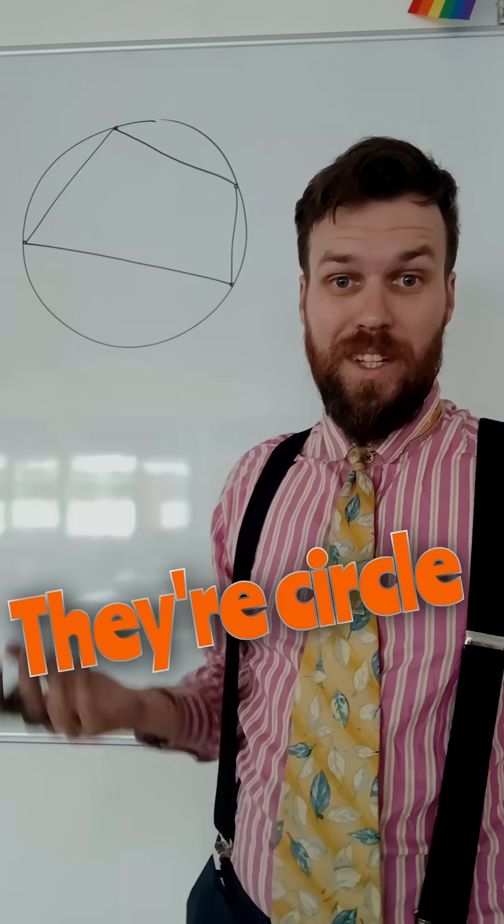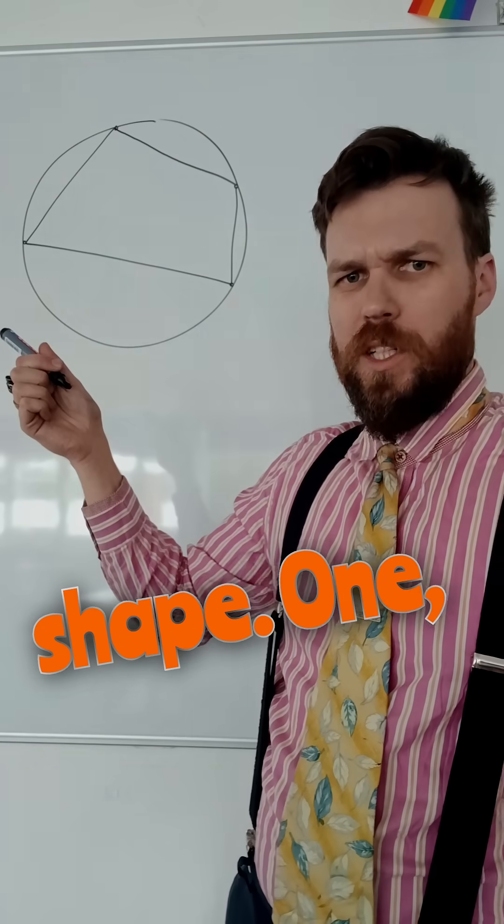So I've got a circle, they're circle theorems, but inside I've got a four-sided shape.